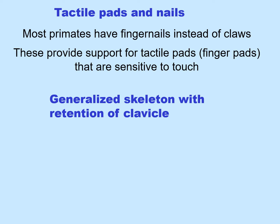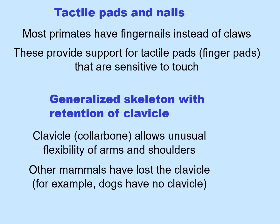Primates also have a generalized skeleton with retention of a clavicle — the collarbone — which allows unusual flexibility of arms and shoulders; you can swing your arms in many different directions. Other mammals have lost the clavicle. For example, dogs have no clavicle, and their legs can only go forward and backward.